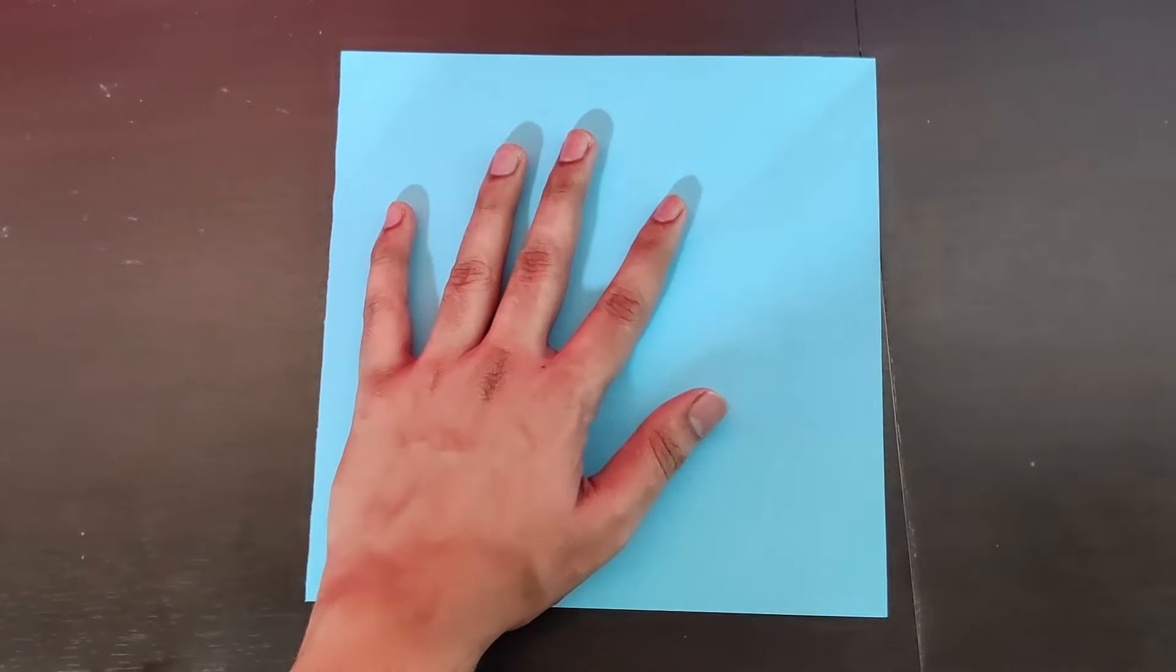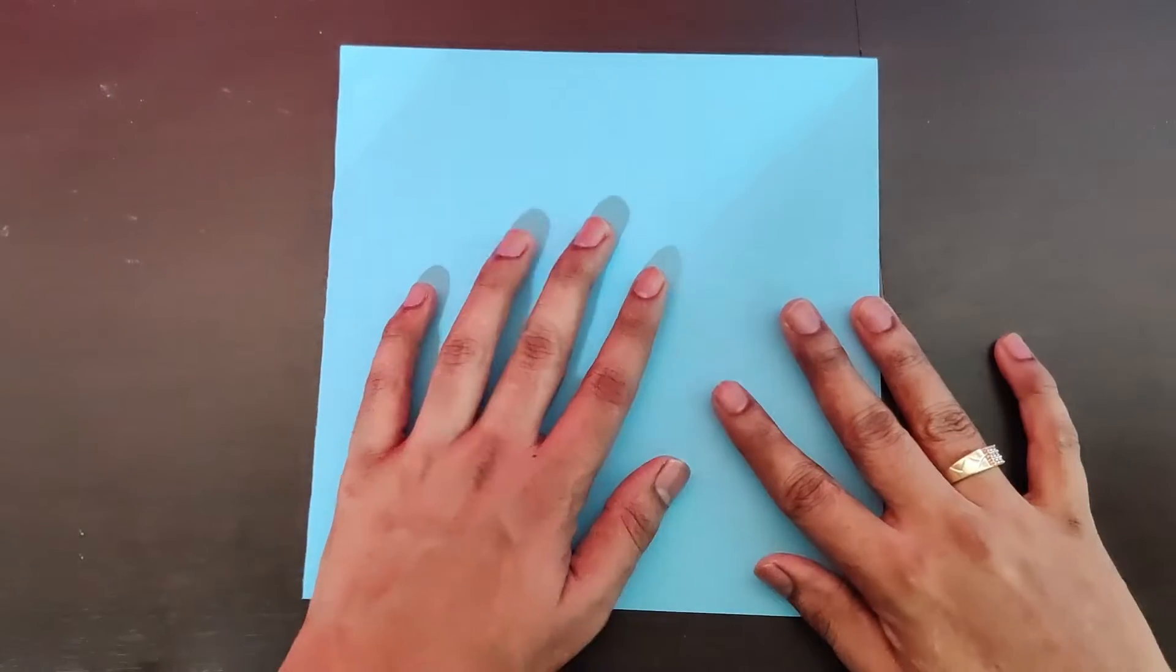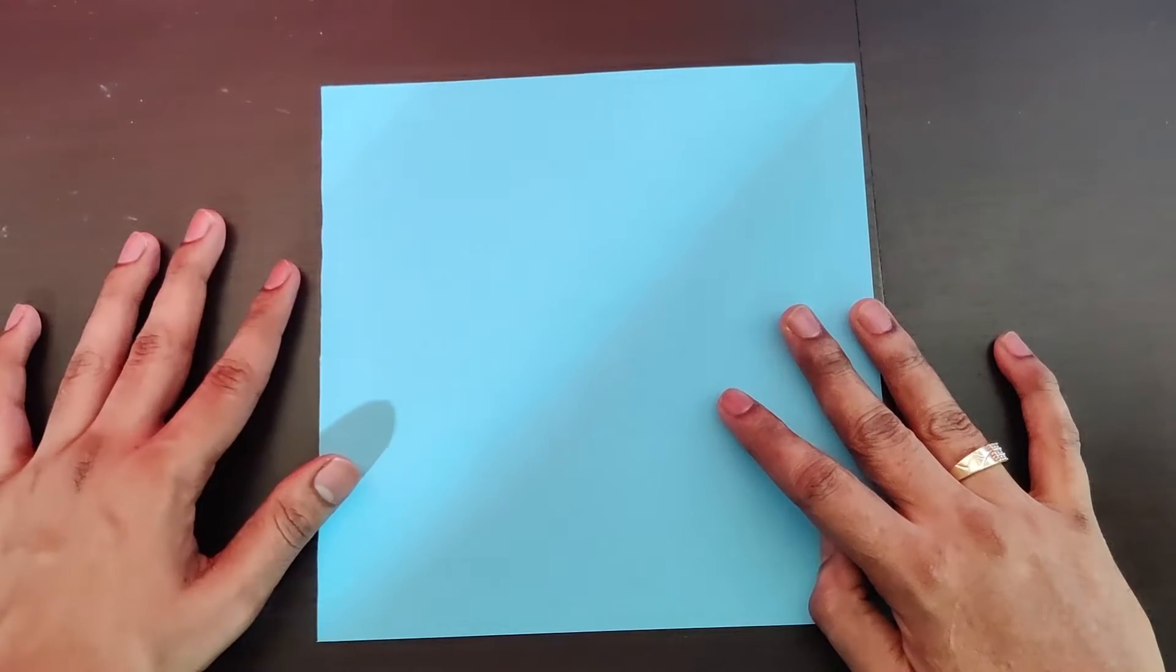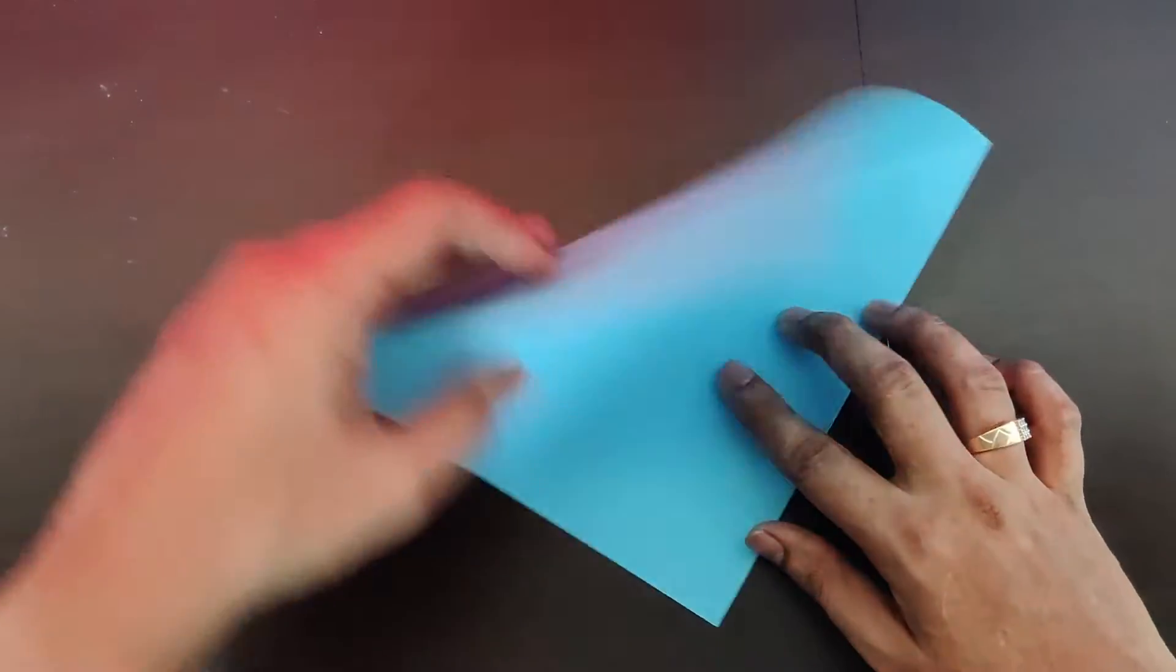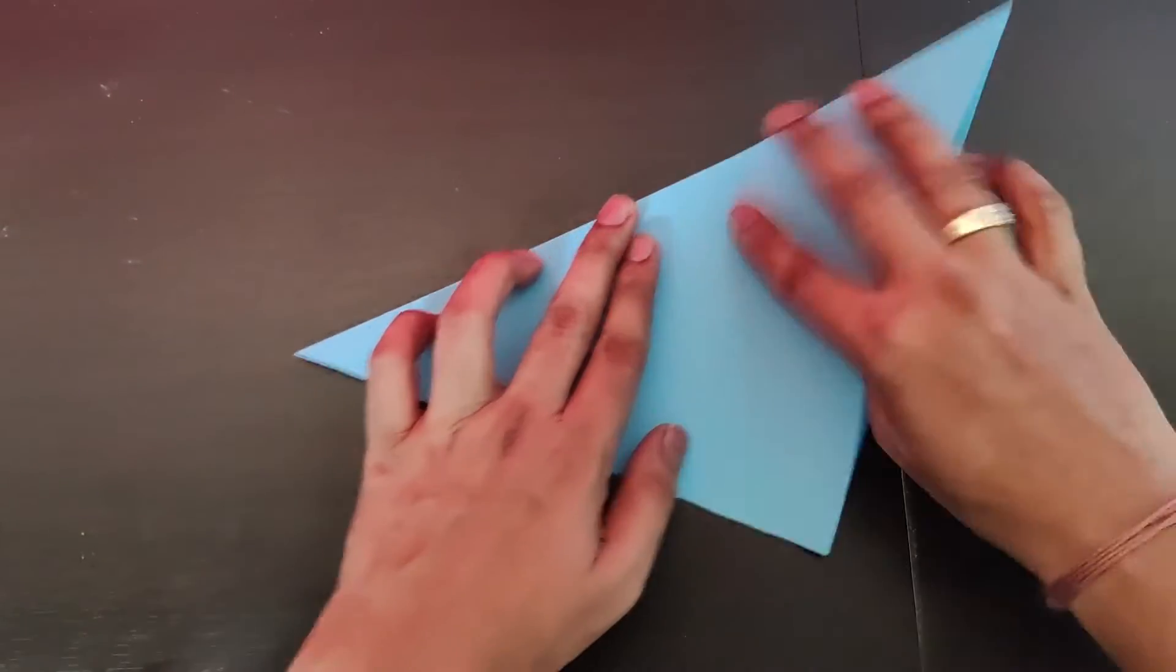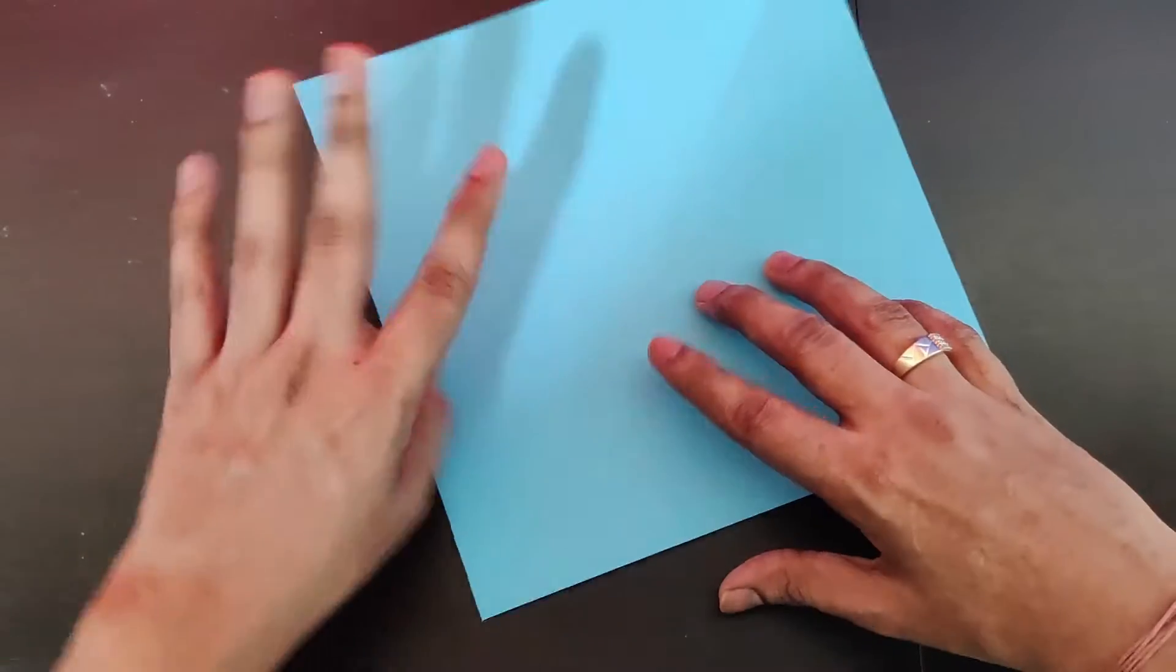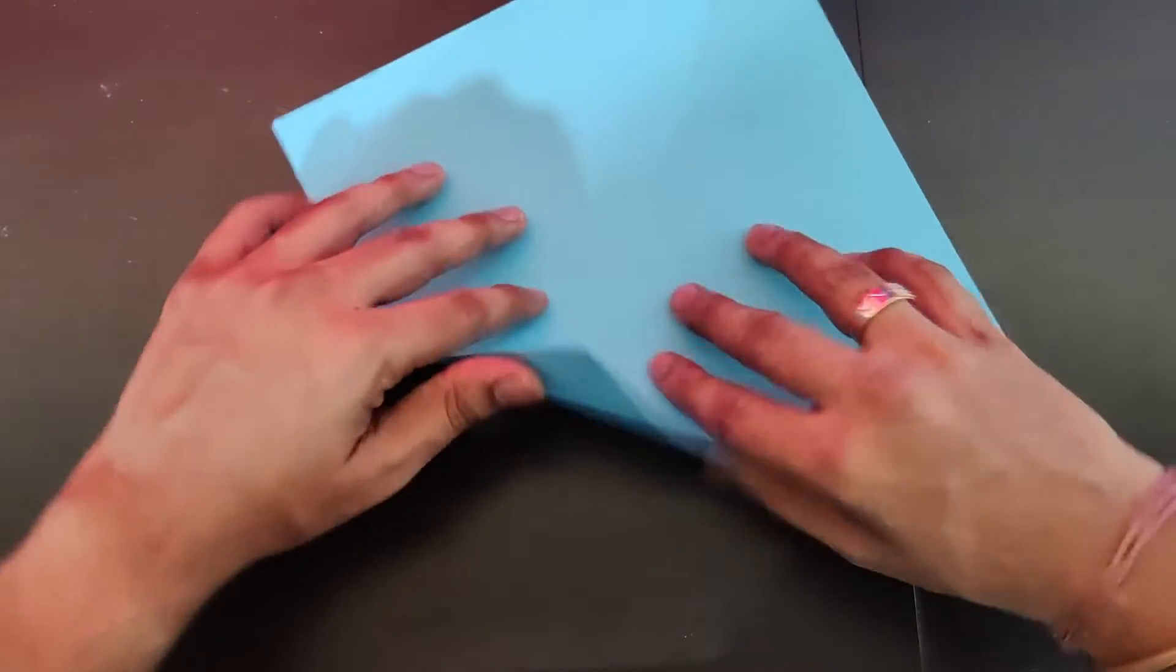For this origami dolphin model, we'll need a square piece of paper. So let's begin. It's a very easy model. First, you fold it along the diagonal axis to make an X in between at the center.